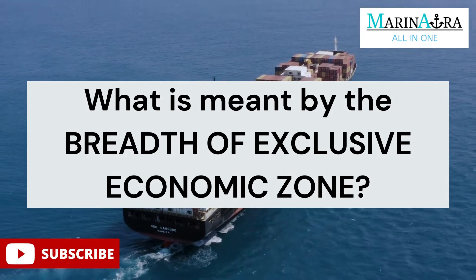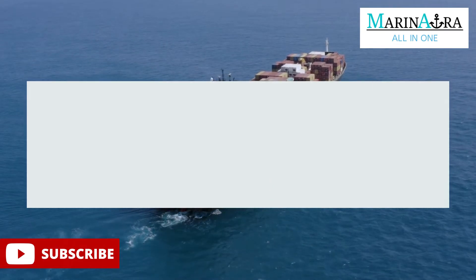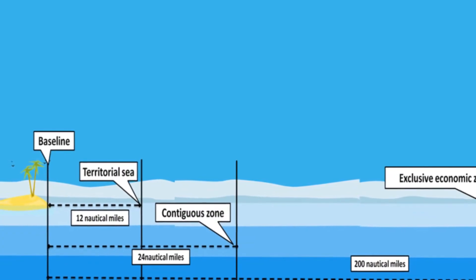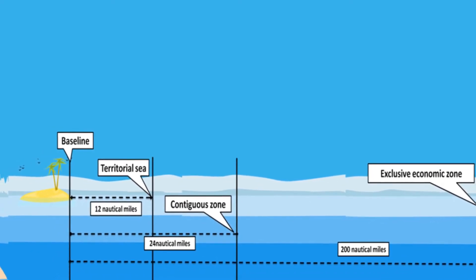Next, what is meant by the breadth of the exclusive economic zone? The breadth of the exclusive economic zone is an area of the sea that shall not extend beyond 200 nautical miles from the coastal baseline, in which a country has special rights regarding the exploration and use of marine resources, such as oil, natural gas, minerals, commercial fishing, energy production from water and wind, freedom of navigation, international trade, national security, and strategic leverage over other nations.